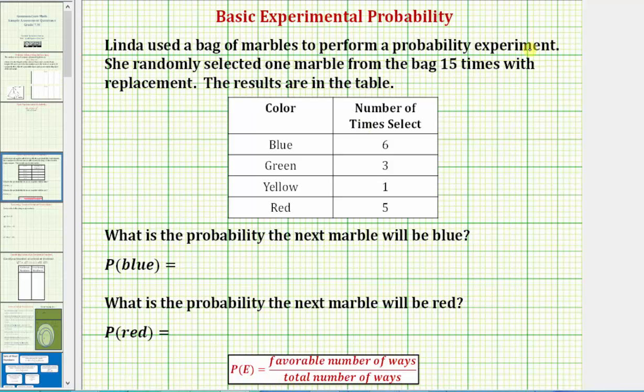In this case, because we have experimental probability, the total number of ways is going to be the fifteen times one marble was selected, and the favorable number of ways is going to be the number of times that color of marble was selected.